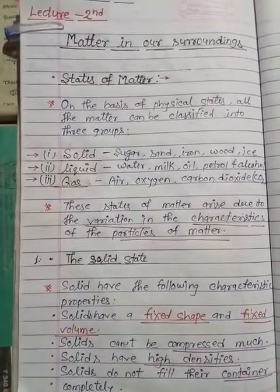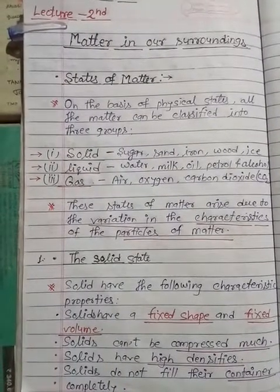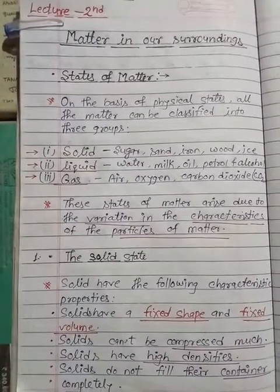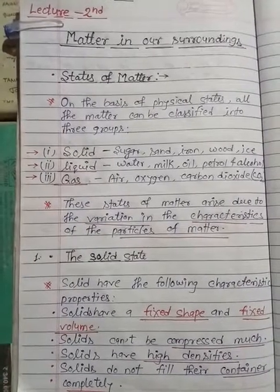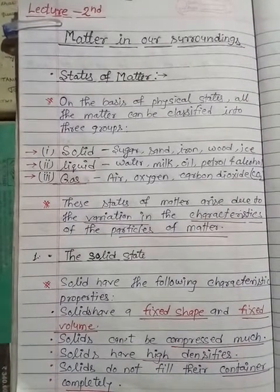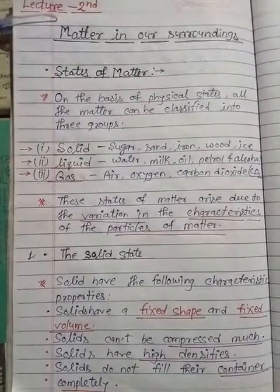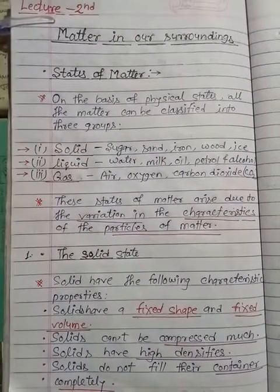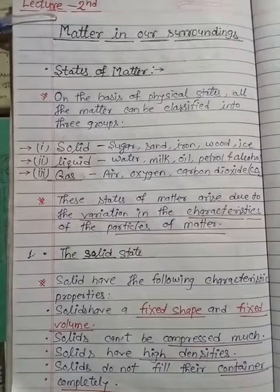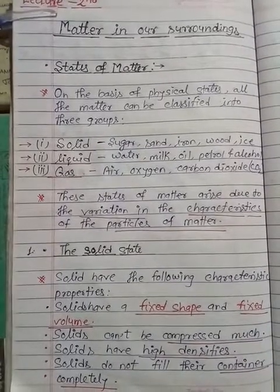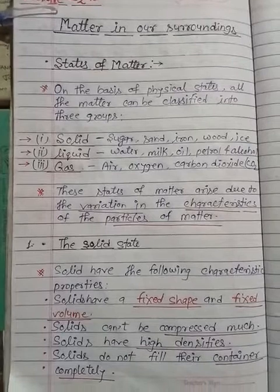Gases include air, oxygen, carbon dioxide, nitrogen, and argon. These are the gases. These states of matter arise due to the variation in the characteristics of the particular matter — the different characteristics of solid, liquid, and gas.